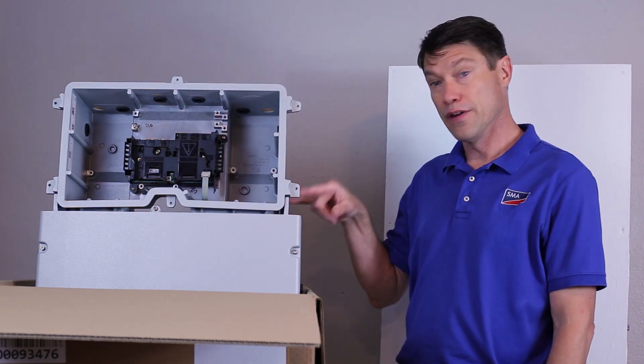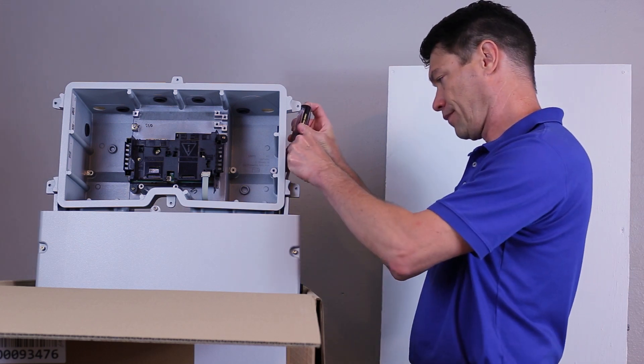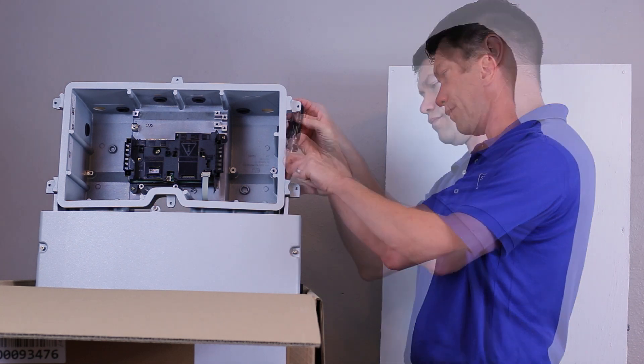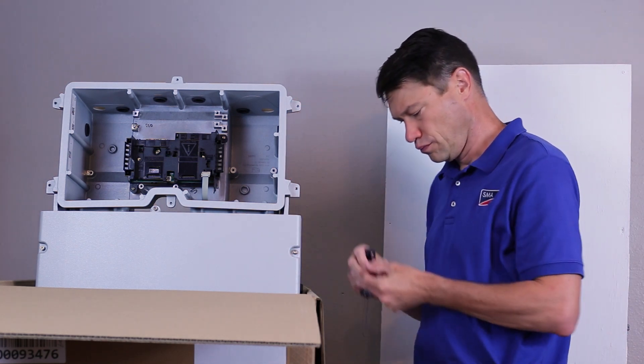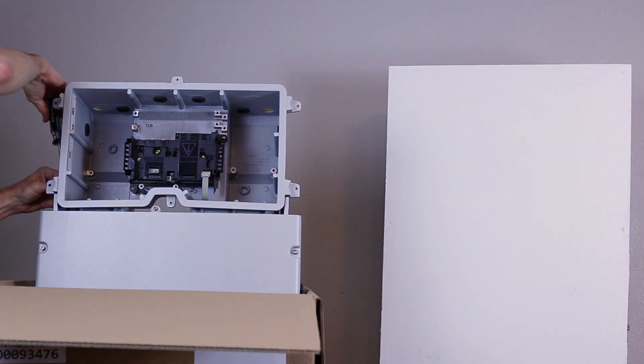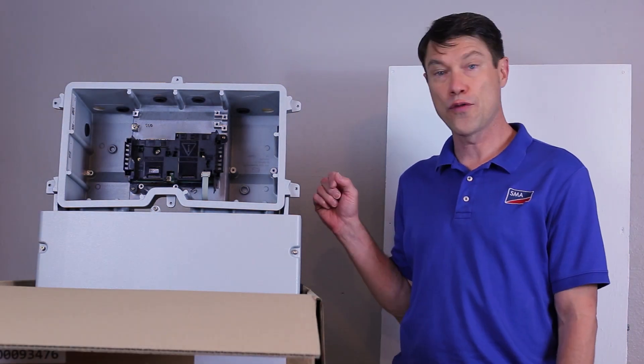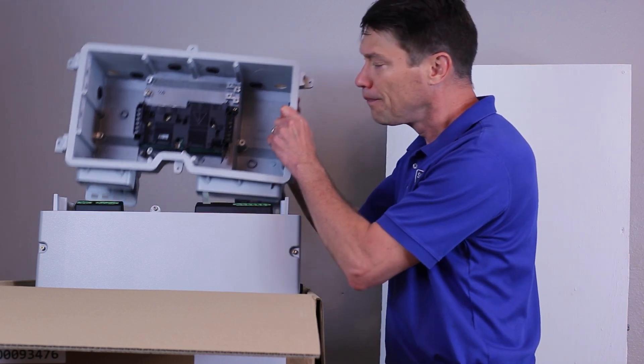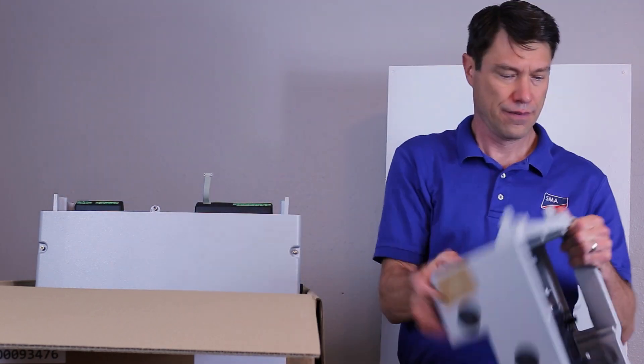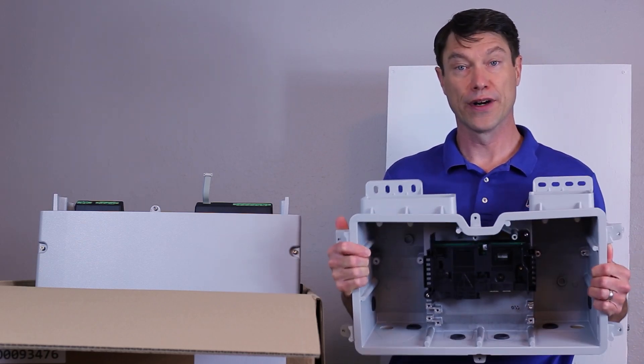Now we're ready to loosen the four Torx 25 screws that actually hold the connection unit to the power unit. When we've removed all four screws, we're ready to gently lift the connection unit off of the power unit. And now we're ready to mount the connection unit on the appropriate surface.